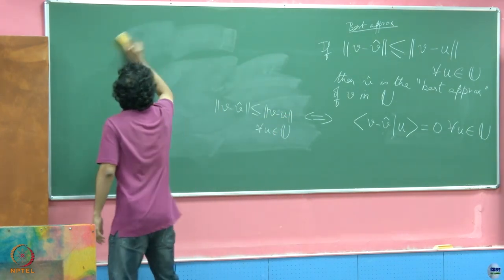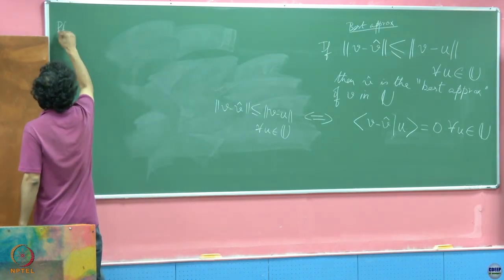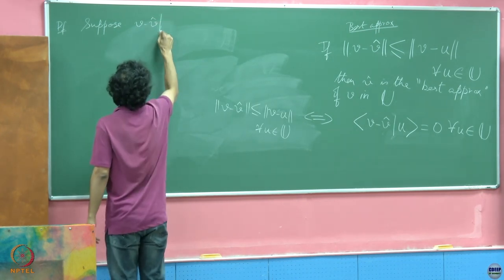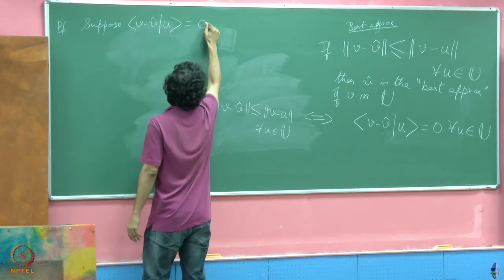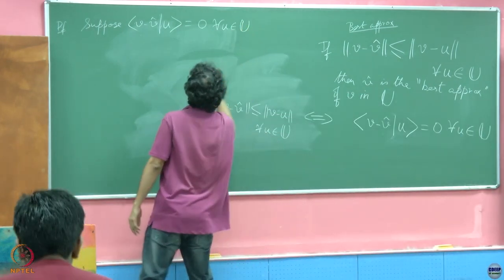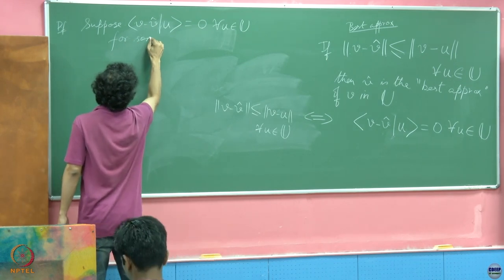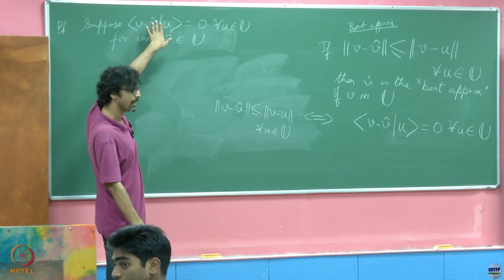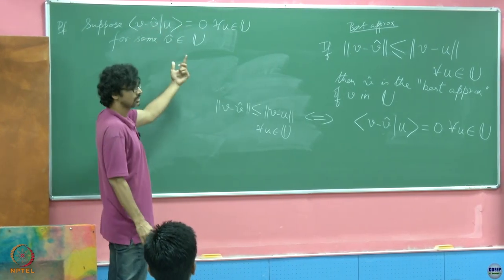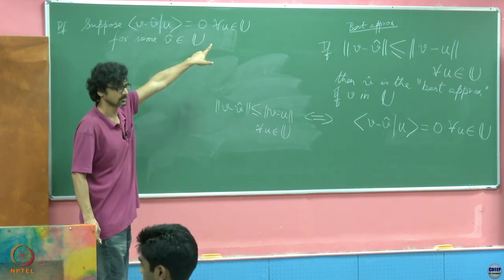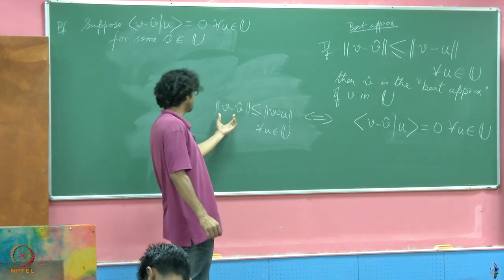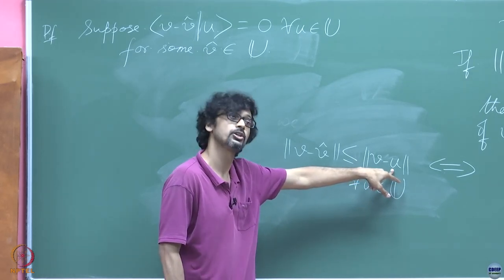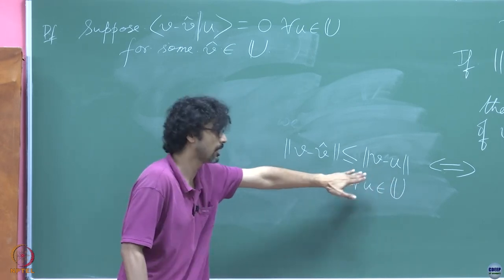Let us try and prove this. First, suppose V minus V-hat - that is, the V-hat you have chosen - is indeed orthogonal to every vector you might choose from U. So we assume up front that you have managed to find a V-hat such that the difference between V and V-hat is a vector orthogonal to every vector in the subspace. Now what we have to show is that the norm of V minus V-hat is the least possible among all other choices from U as potential candidates for best approximation.